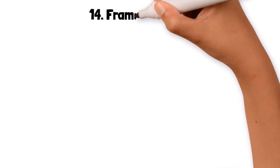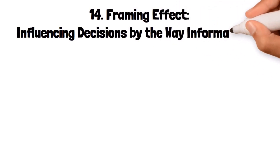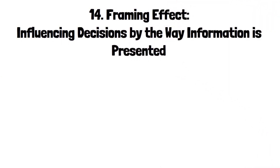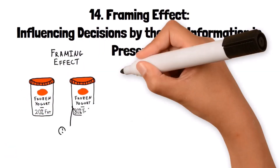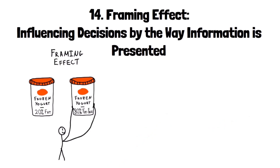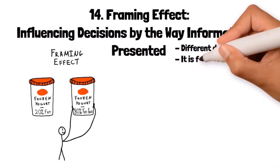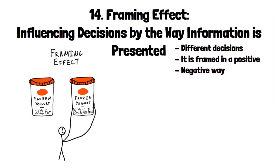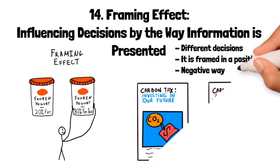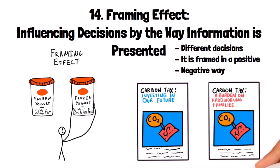14. Framing Effect: influencing decisions by the way information is presented. The framing effect occurs when people's decisions are influenced by the way information is presented rather than just the information itself. The same fact can lead to different decisions depending on whether it is framed positively or negatively. For example, people might be more likely to choose a surgery with a 90% survival rate than one described as having a 10% mortality rate, even though both statistics mean the same thing.